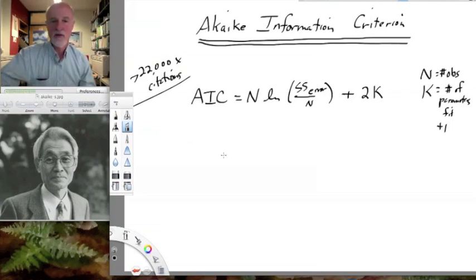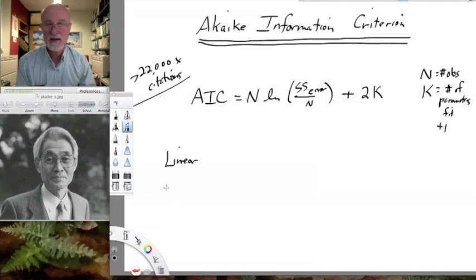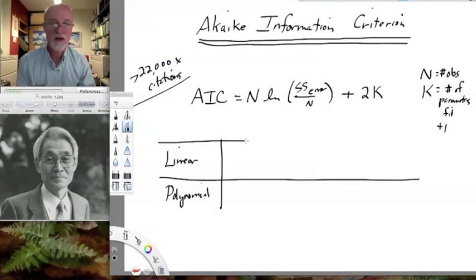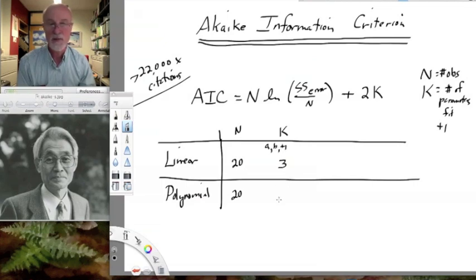Okay, and so I'm going to give you an example of some kind of numbers we might get. For example, if we try a certain set of data and we try a linear fit and a polynomial fit, I'll show you just some actual numbers from a real regression that I tried recently. The N, in both cases, was 20. K was 3. So in the case of linear fit, we have A, B, and then we add 1 to that, so we have 3 parameters.